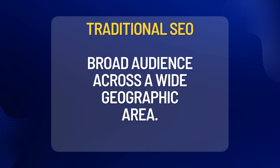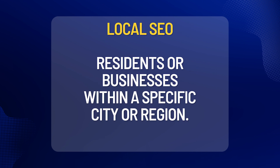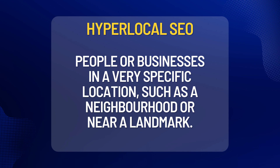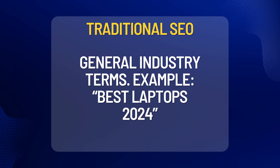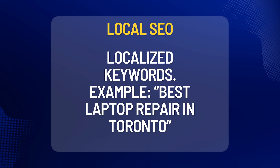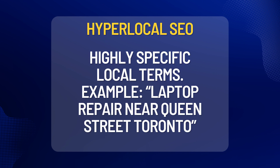For targeted audiences, in Traditional SEO you would target a broad audience across a wide geographic area. For Local SEO, you would target only those people in a specific city or region. While with Hyperlocal SEO, you would target people or businesses in a very specific location, such as a neighborhood or near a specific landmark. For keyword focus, in Traditional SEO you would use general industry terms like 'Best Laptops for 2024.' For Local SEO, keywords would reflect a more local theme like 'Best Laptop Repair in Toronto.' And for Hyperlocal SEO, you'd go ultra-specific, like 'Laptop Repair near Queen and Bathurst, Toronto.'